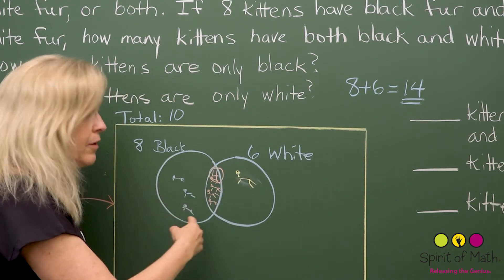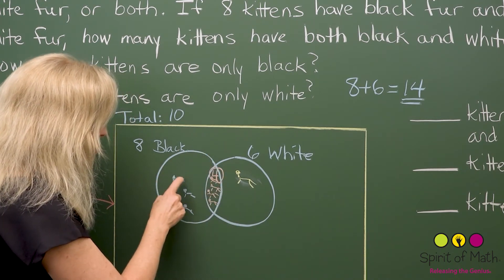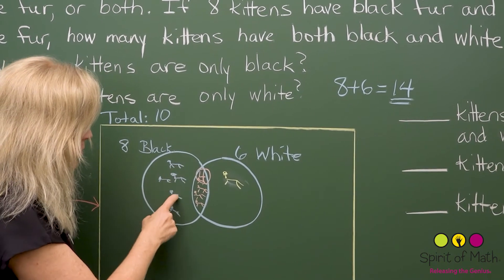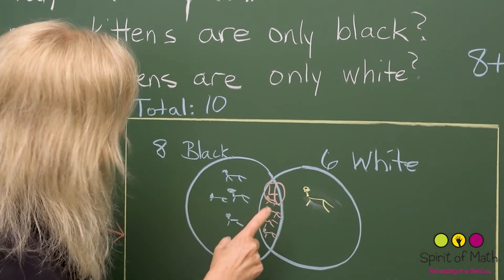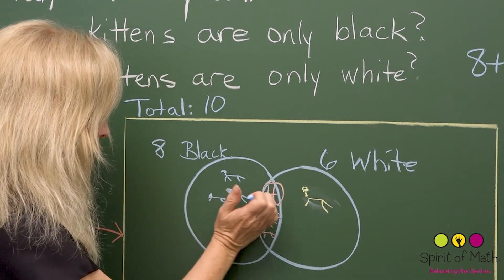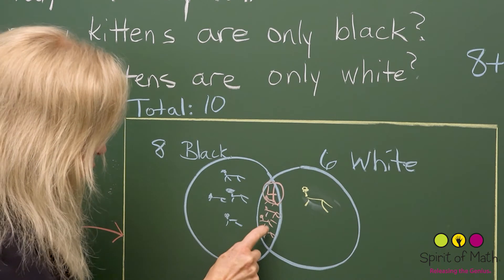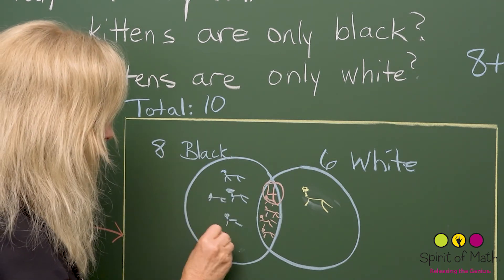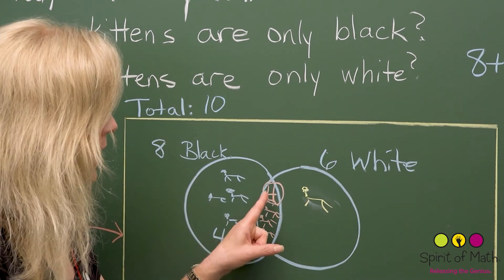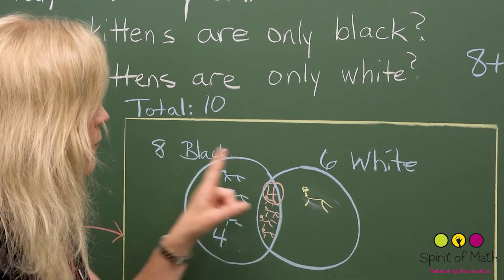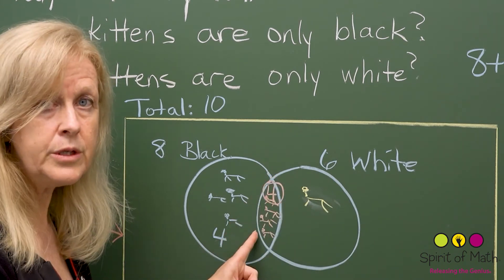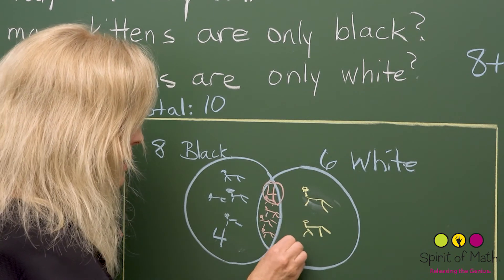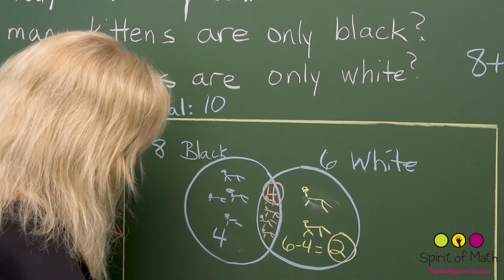If four kittens are in the overlap and there are supposed to be eight total in the black circle, then four plus four equals eight — so there are four kittens that are just black. For the white circle: you've already got four included in the overlap, and six minus four equals two, so two kittens go in the white-only section. So you've got four in the overlap, four black only, and two white only.